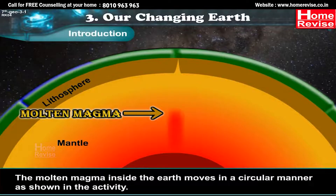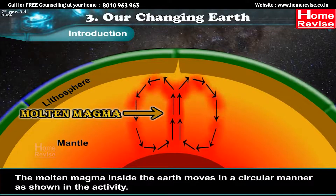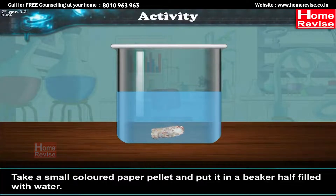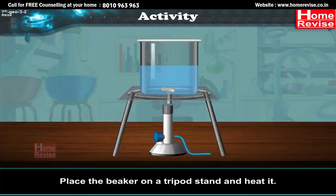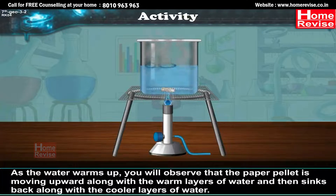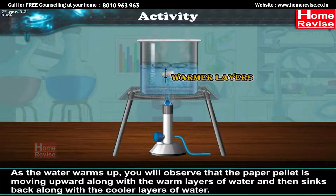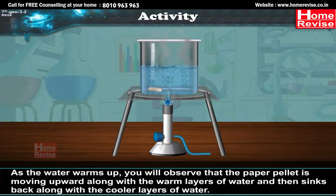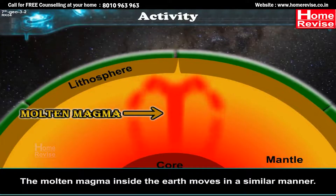The molten magma inside the Earth moves in a circular manner, as shown in the activity. Take a small colored paper pallet and put it in a beaker half filled with water. Place the beaker on a tripod stand and heat it. As the water warms up, you will observe that the paper pallet moves upward along the warm layers of water and then sinks back along with the cooler layers of water. The molten magma inside the Earth moves in a similar manner.